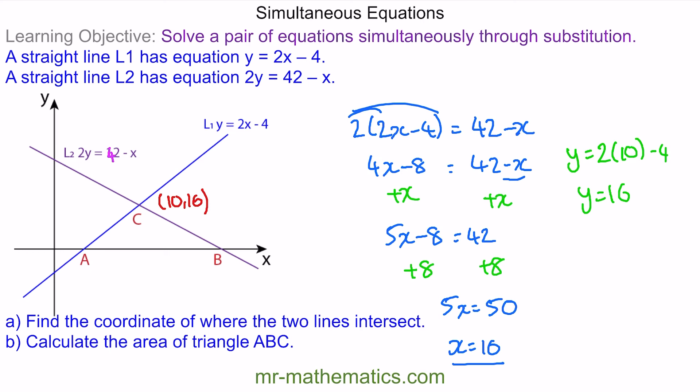Finally, we can calculate the area of triangle ABC, which is this triangle here. We'll use the formula half of the base multiplied by the height. We know the height is 16, which is given by this coordinate. So we need to work out our base.